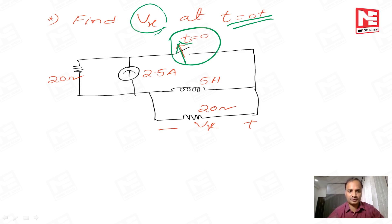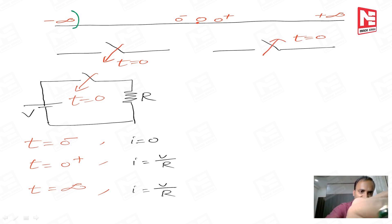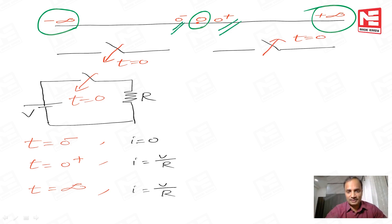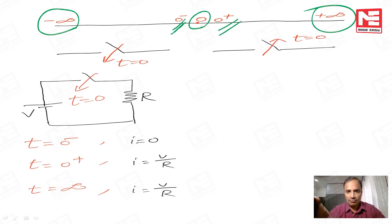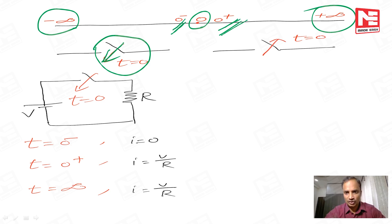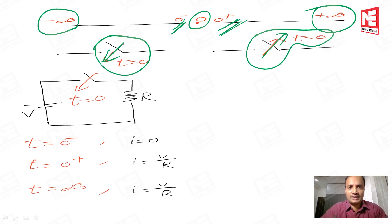Before proceeding to the solution, let us see some basics in transients. We consider the total time period from minus infinite to plus infinite. At one instant the time reaches zero seconds. Use the terminology zero minus and zero plus: zero minus means immediately before operating the switch, zero plus means immediately after operating the switch. In the arrow mark direction the switches are operated — if you change the switch position, the entire solution changes. Before proceeding with any problem, concentrate on the switch positions very carefully.